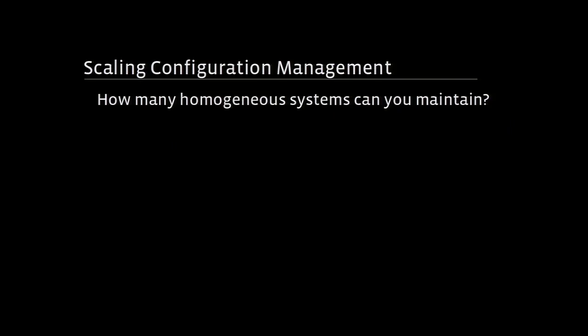The first thing you might ask yourself is: how many homogenous systems can you maintain? Homogenous systems are a very specific need. If you have a large HPC-style cluster, it may be sufficient to use Rdist or Rsync. In fact, IBM wrote a set of tools called Xcat, which is very, very good at managing tons and tons of systems that need to be completely identical.